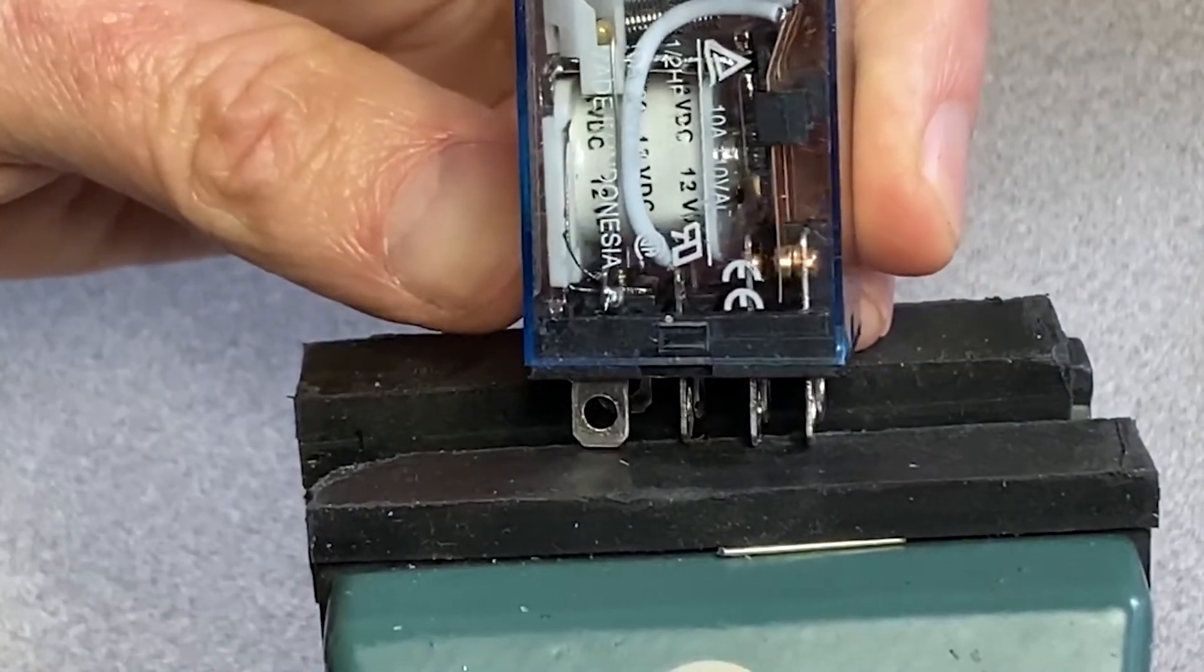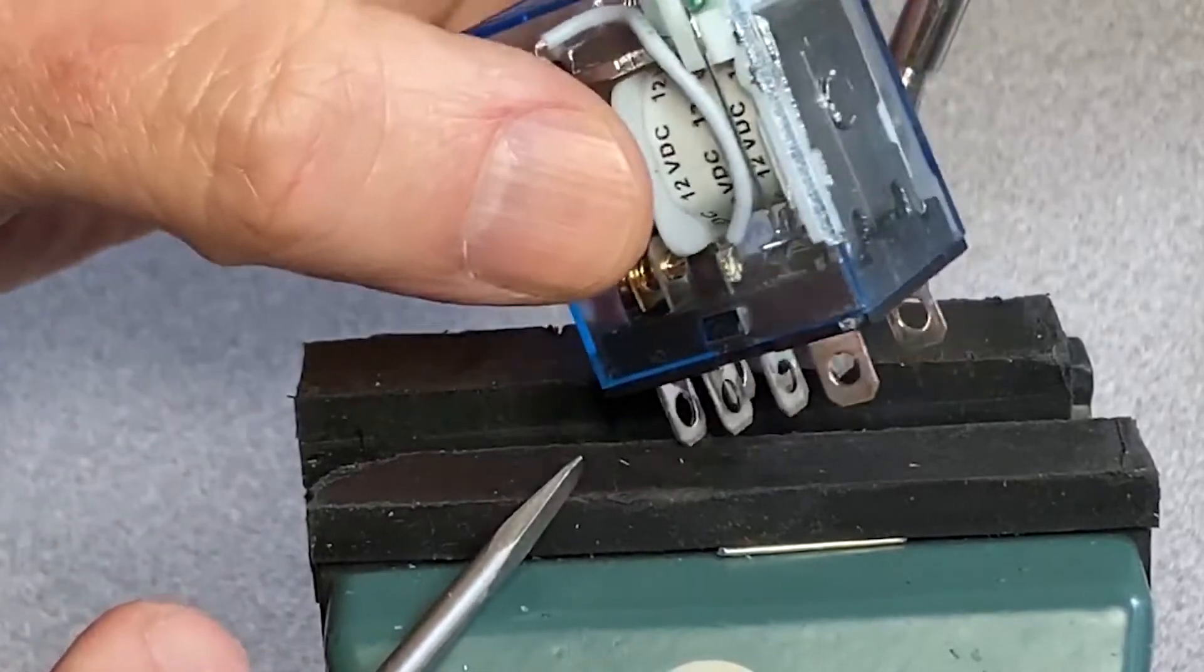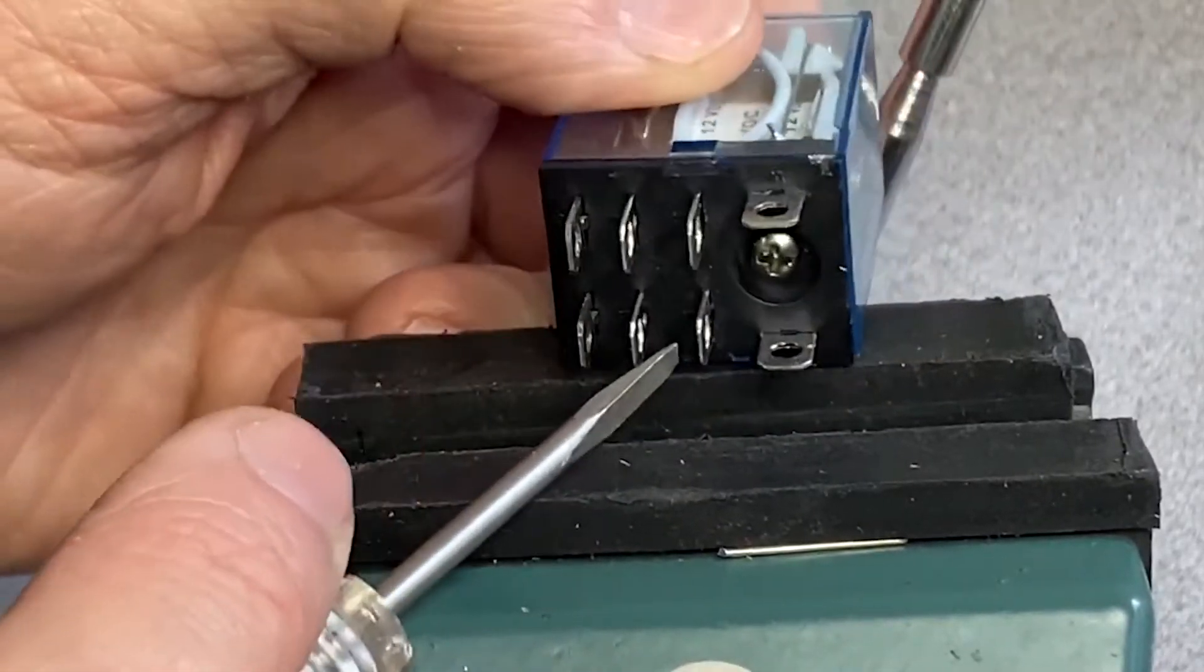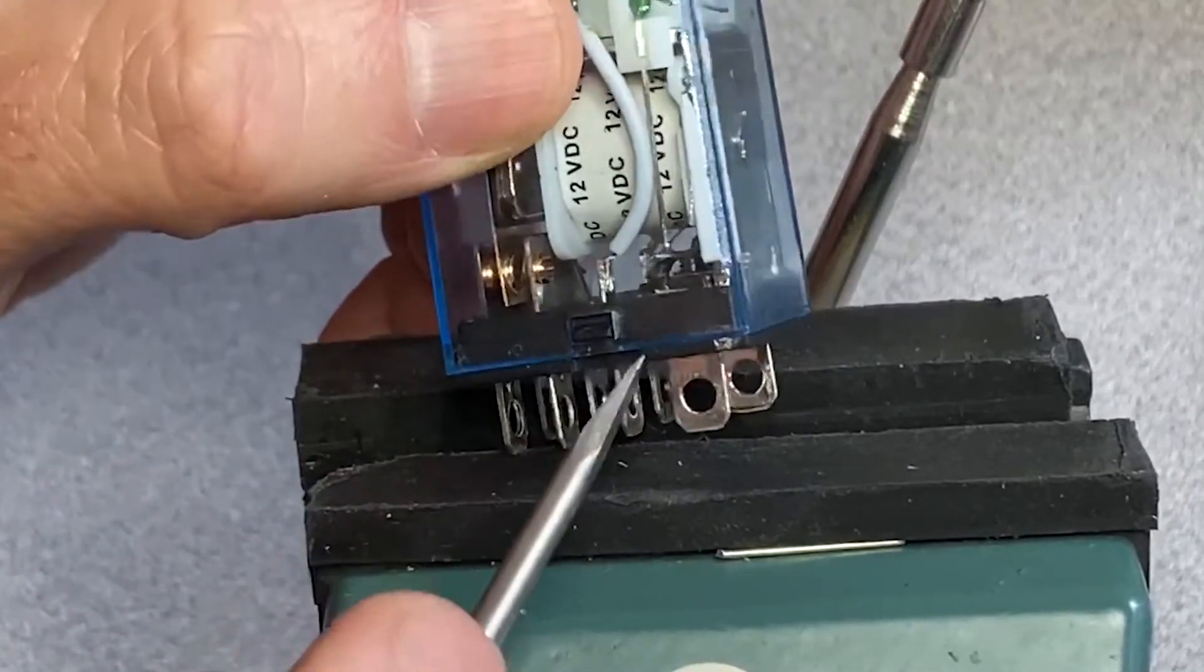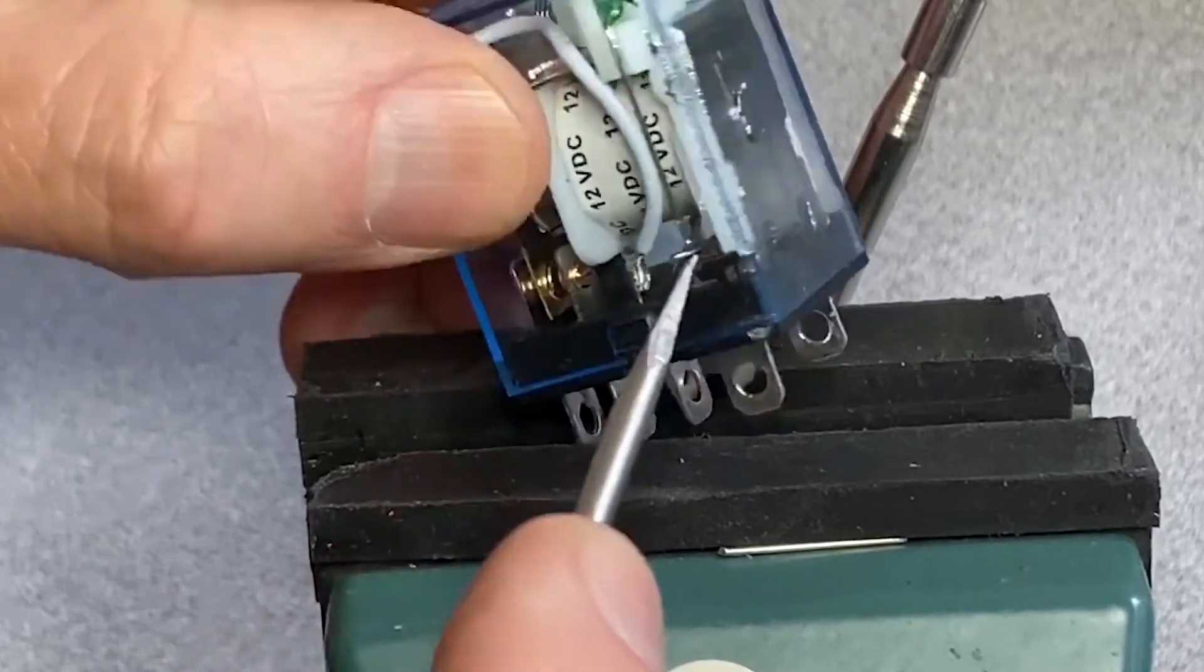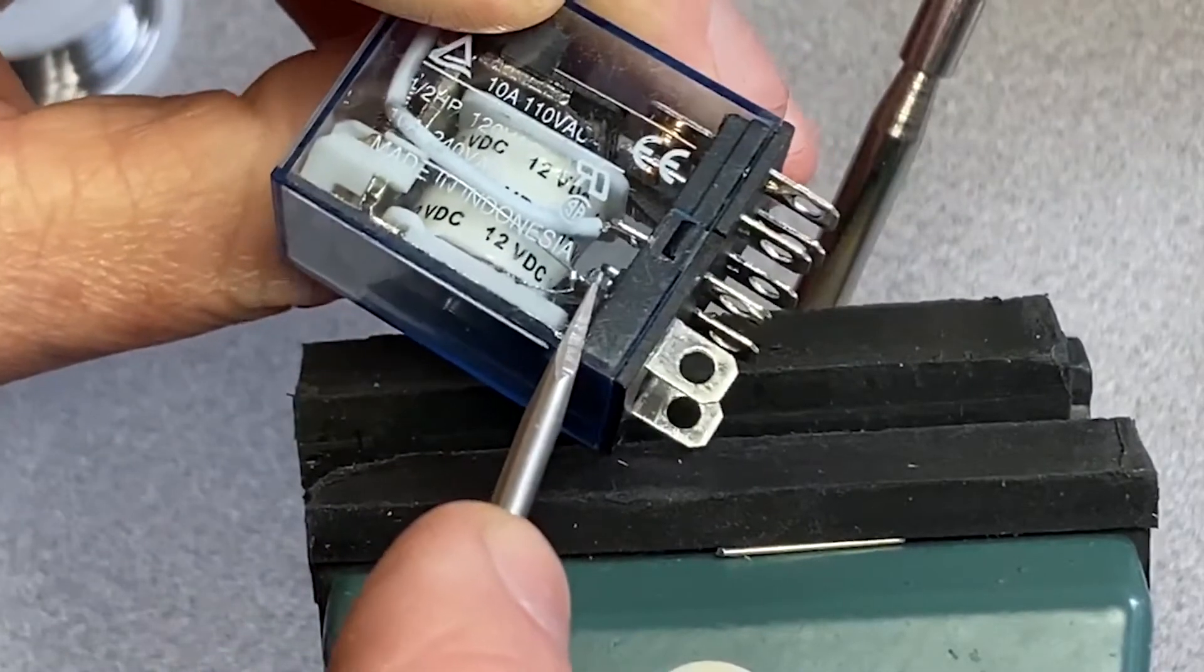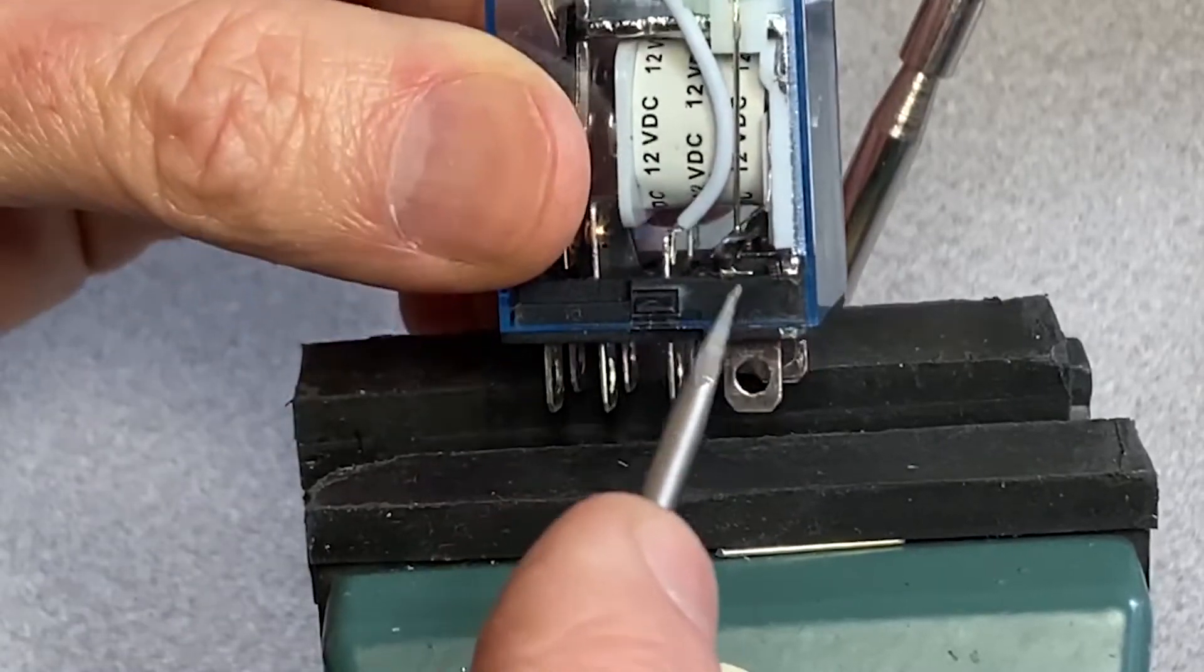So, when I ship these out, I actually mark the positive side, which is this side, which is pin 8. And so, if you're going to make one of these yourself, you want to put that white line next to pin 8. The other side goes to pin 7. And that's all there is to it.